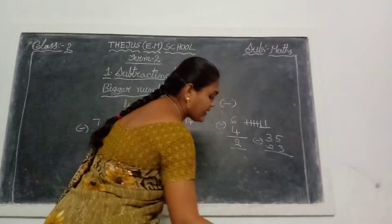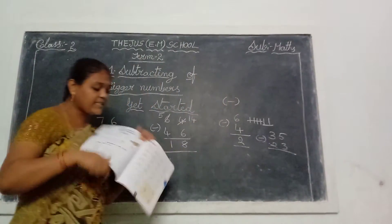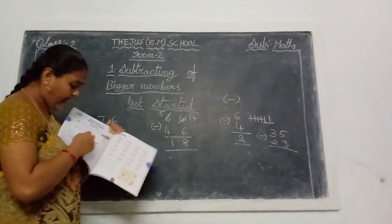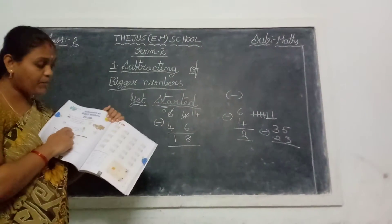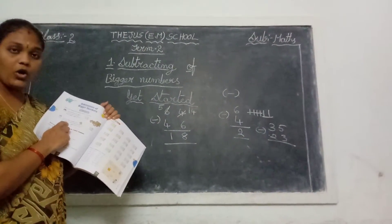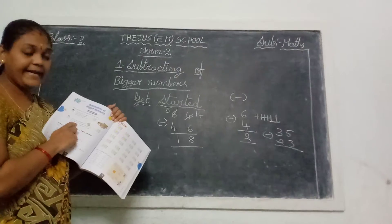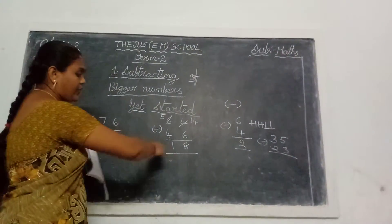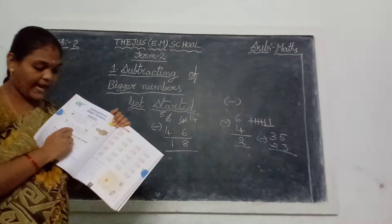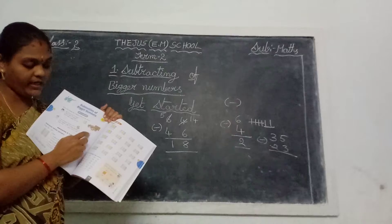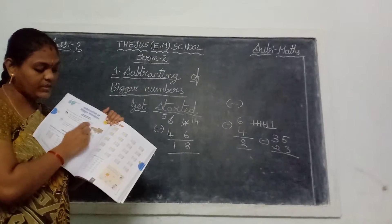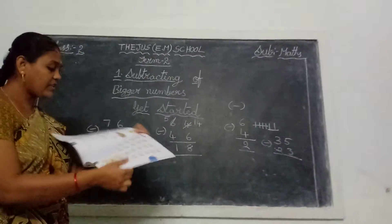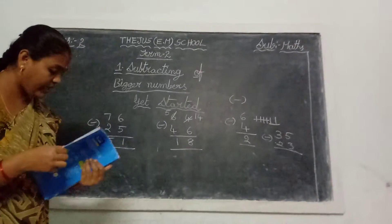Complete these 2 sums. The answer is 18 — write 18 in this blank. Complete these 2 sums also. Complete those questions, children, quickly.